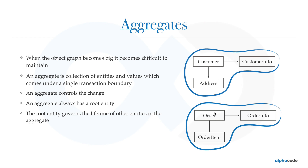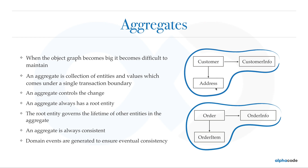The root entity governs the lifetime of other entities in the aggregate — if you delete the customer, all of that information has to go; if you delete the order, all of that information has to go. An aggregate is always consistent. For example, if a customer updates their address, it should eventually be passed on to order within the next 30 seconds. If you change anything here, this has a strict transaction boundary and should be changed immediately, and then you can fire a domain event from customer to order so that the order updates the address as well.